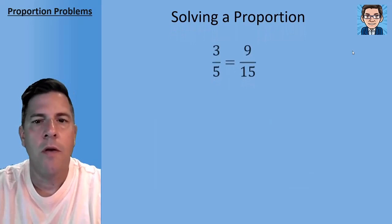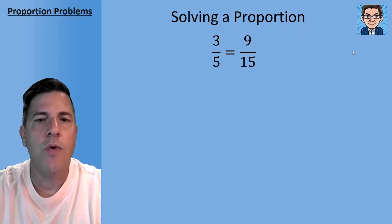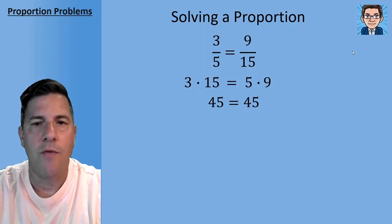So now solving proportion, we can notice that back in that proportion, three fifths equals 9 over 15. The two diagonals are going to multiply to the same thing when you've got a proportion. So the 3 times the 15 and the 5 times the 9 are both going to equal 45.